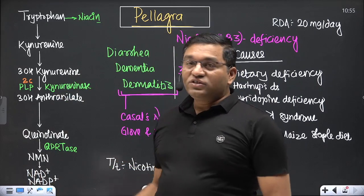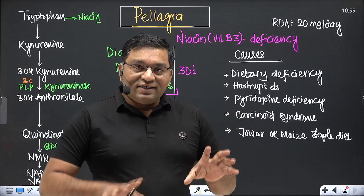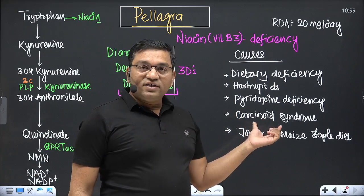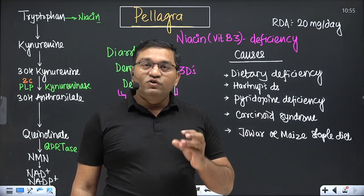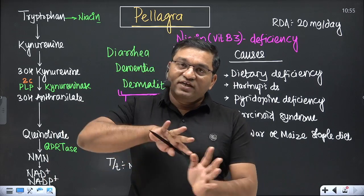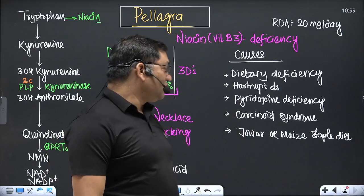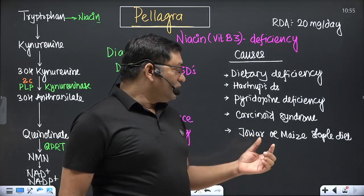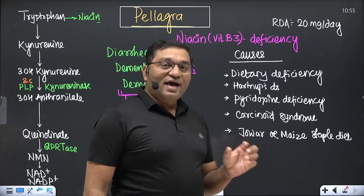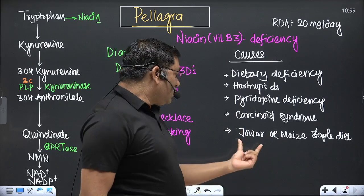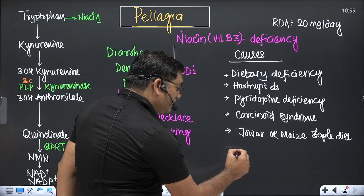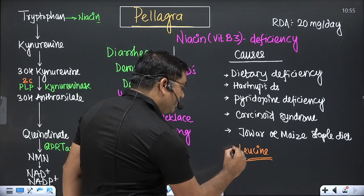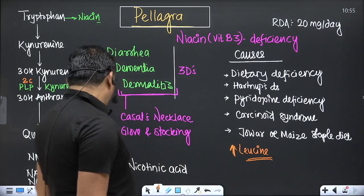Carcinoid syndrome is related to tryptophan, in which most tryptophan is diverted for serotonin production. It is a tumor of the enterochromaffin cells of the intestine that produces serotonin from tryptophan, leaving less tryptophan for niacin synthesis. In jowar- and maize-eating populations, when jowar is eaten as a staple diet, its high leucine content inhibits the QPRT enzyme, causing niacin deficiency.